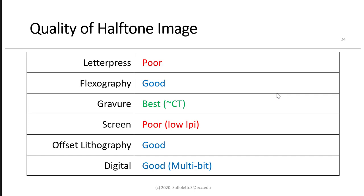Digital has good halftone image quality, not because of high LPI, but because it's a multi-bit technology. Every printing process except digital is essentially single-bit binary — either you have image or non-image, ink or no ink. However, in gravure you can vary the depth of the cells, varying the ink film thickness (IFT), which also makes it multi-bit. In digital, you can put multiple layers of toner or multiple layers of fluid liquid inkjet down.